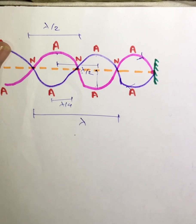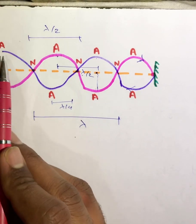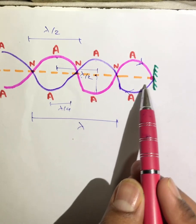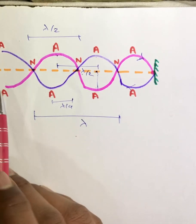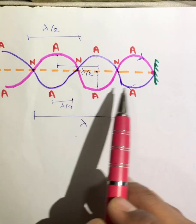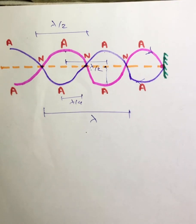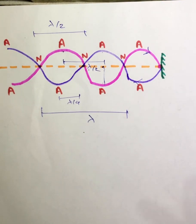The fifth property is that a stationary wave is a doubly periodic phenomenon. The purple wave moving away from the wall and the pink wave moving towards the wall are both periodic in nature. Since two waves are periodic in nature, we call a stationary wave a doubly periodic phenomenon.